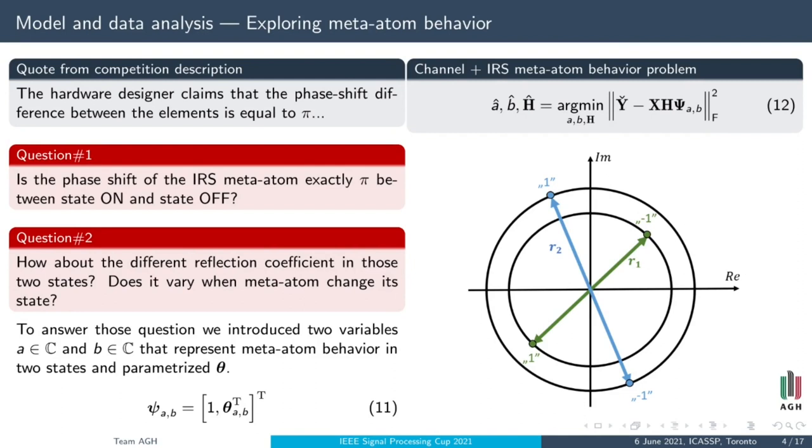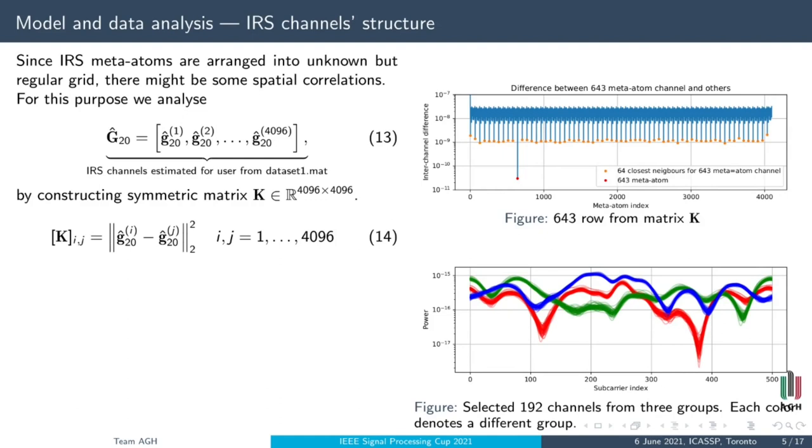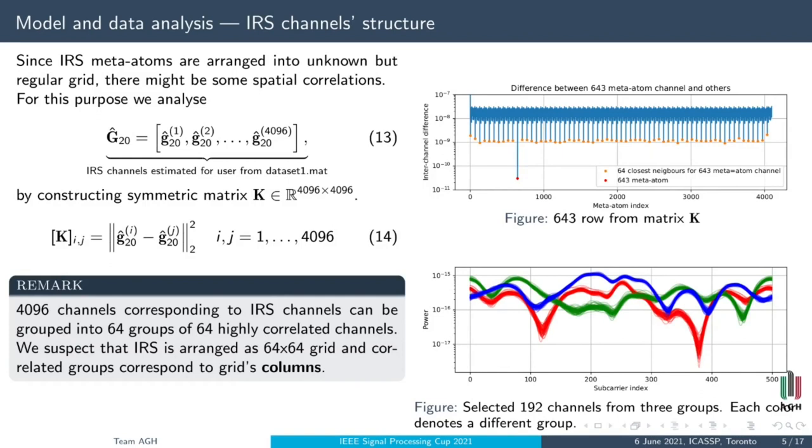Since IRS meta-atoms are arranged into unknown but regular grid, we checked whether there is some correlation between channels. After estimating channels with least-square method run on first dataset, we have found that there are 64 groups of 64 elements for which filters are very similar. From that, we can deduce that IRS is shaped 64 by 64. Let's call each group as column because that's probably the structure.